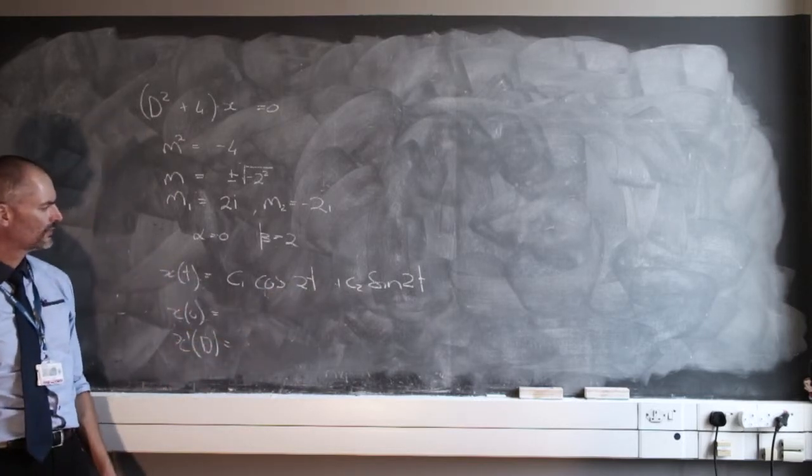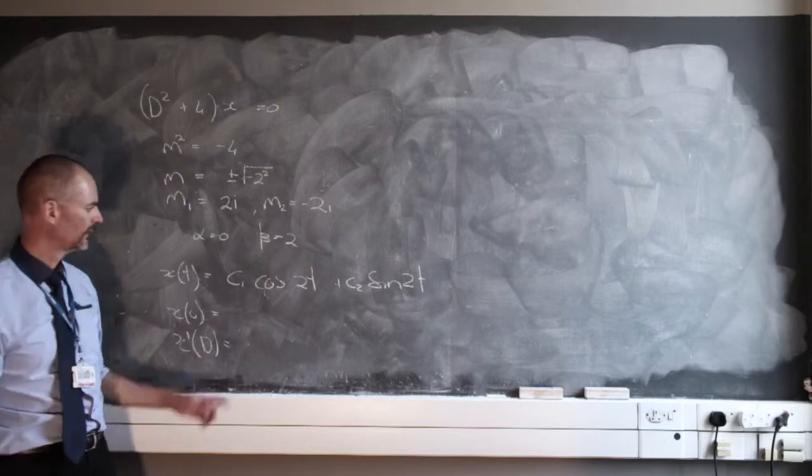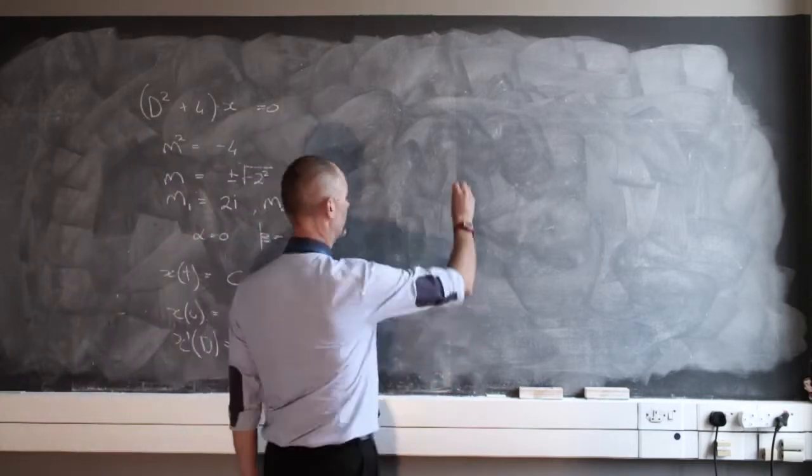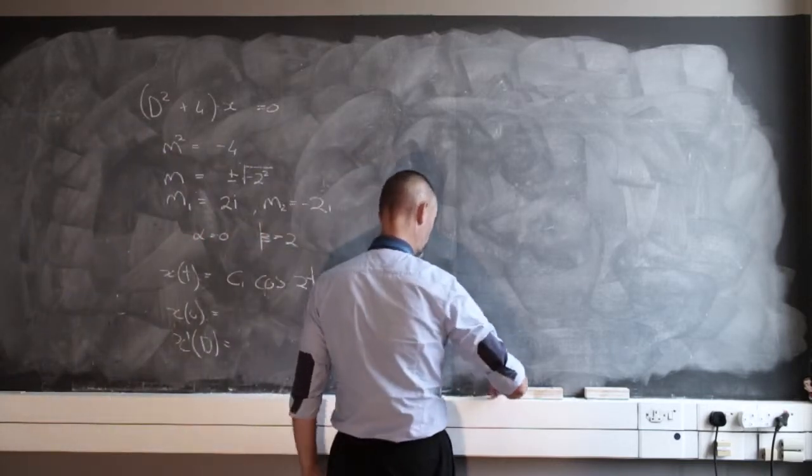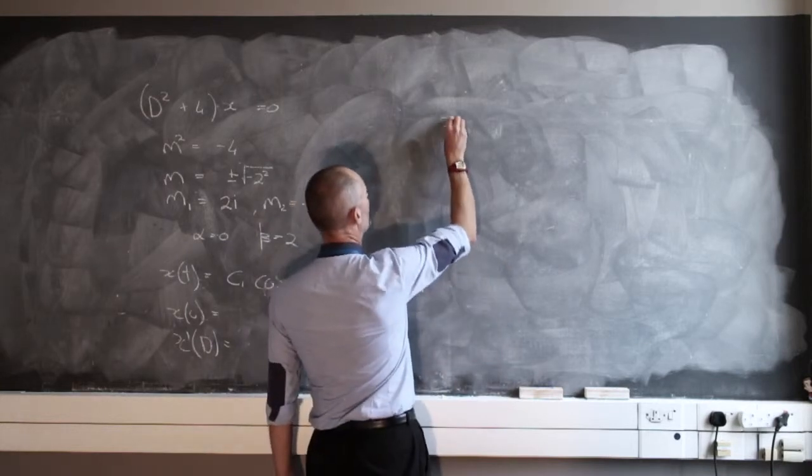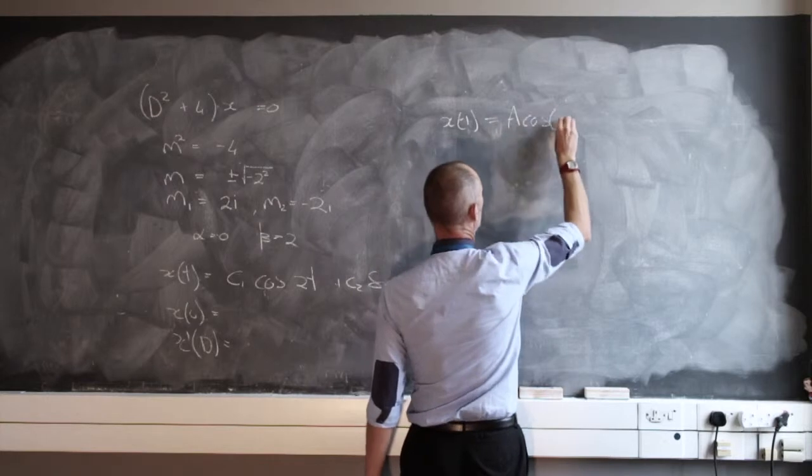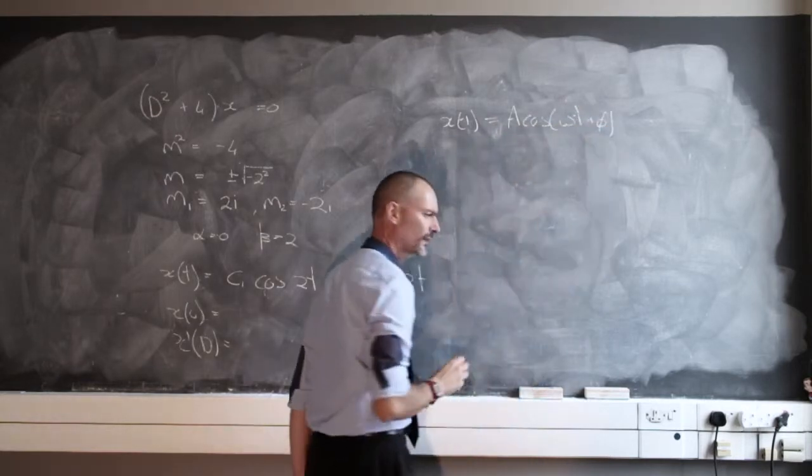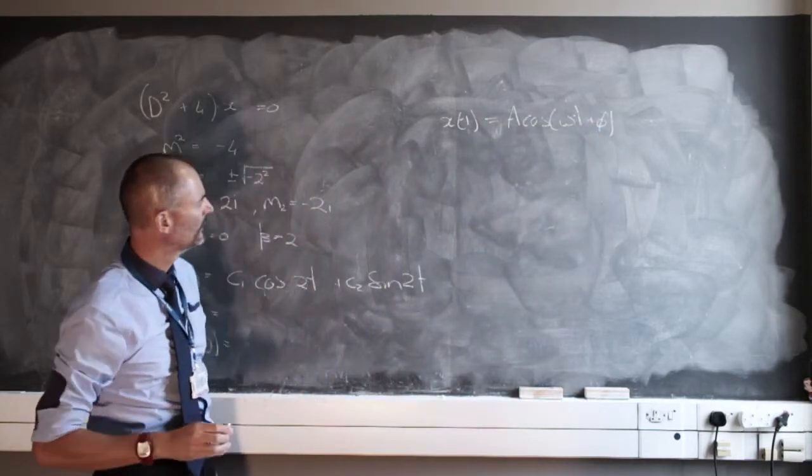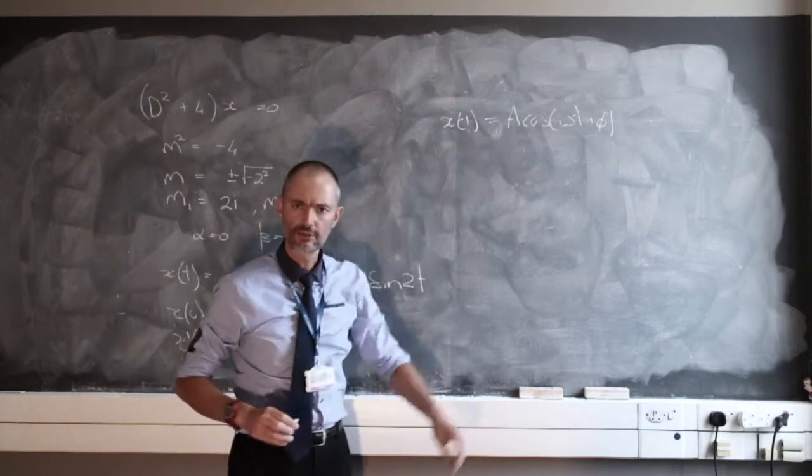So that's how we do it, but usually we don't like to express things like this. Because we like to express things a bit differently, we like to say that x of t equals A times the cosine of omega t plus phi. That would be the more physical way to do this.